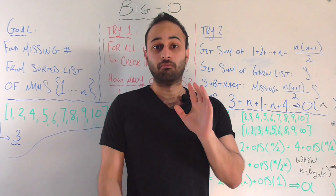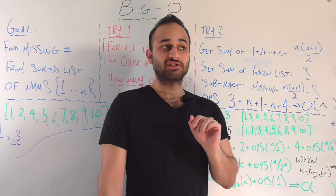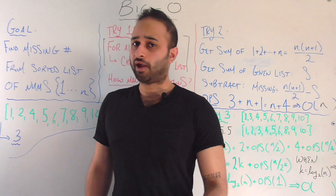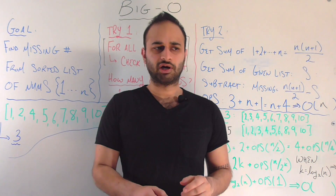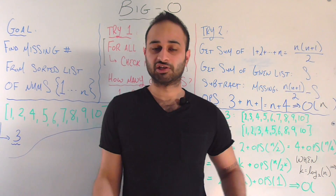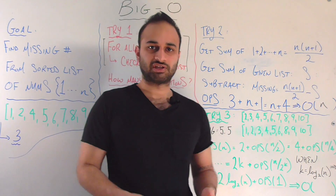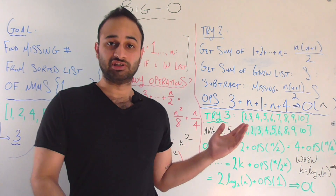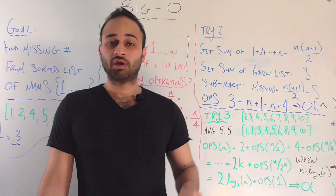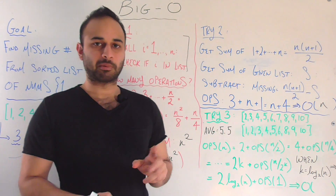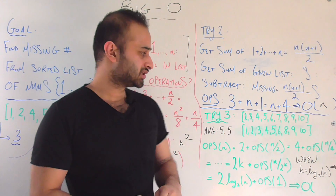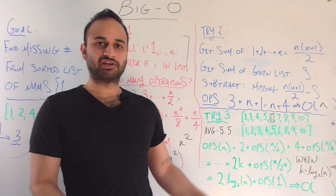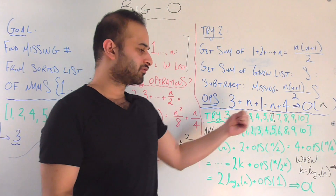So let's close by looking at the most clever solution. This takes into account that the list is sorted, but uses that in a much more powerful way. Let's say I have a list of all numbers from one to ten, and the missing element is one. I'm going to find the middle element of this list, which is six — there are four elements on the left and four elements on the right.